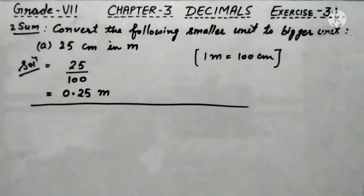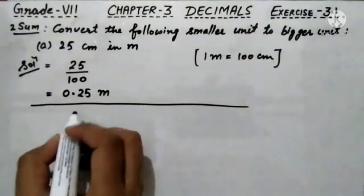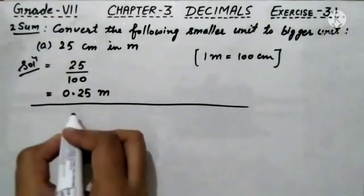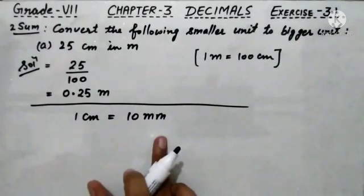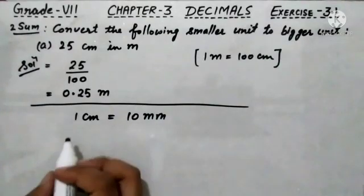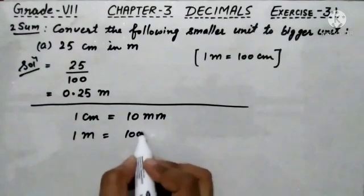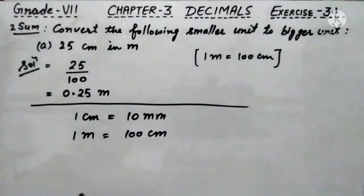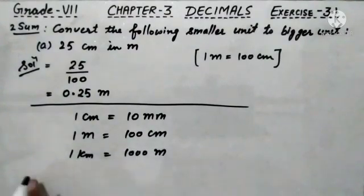The remaining B, C, D parts are quite similar to the first and second sum A part. The key thing to keep in mind is the conversion of units. The formulas you need are: 1 meter equals 100 centimeter, 1 centimeter equals 10 millimeter, and 1 kilometer equals 1000 meter. Using these three formulas, all the sub parts are solvable by you.